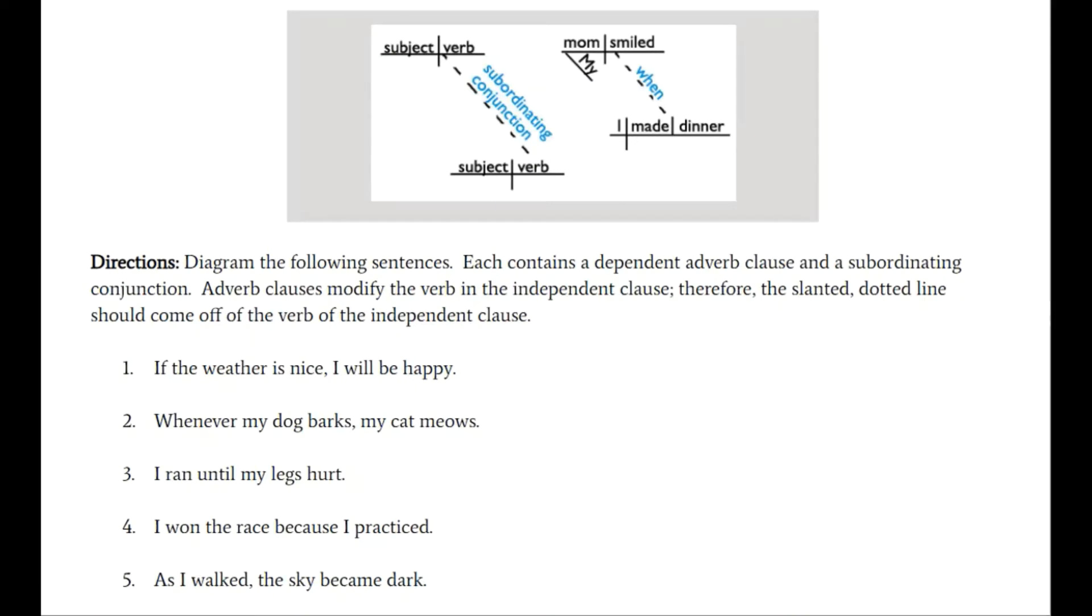A diagonal dotted line is going to be the place where your subordinating conjunction goes. Let's diagram all five of these sentences this time. So pause the video, good luck, and we'll look at the answers soon.